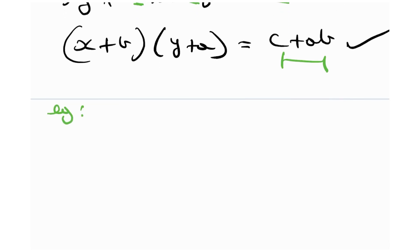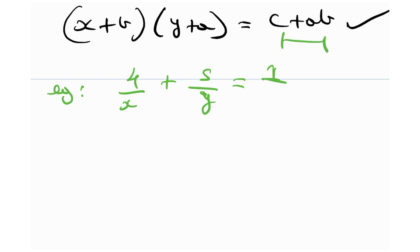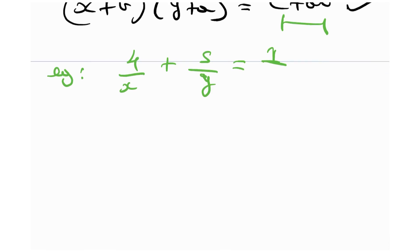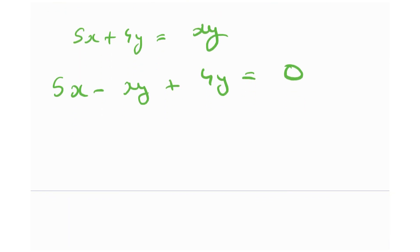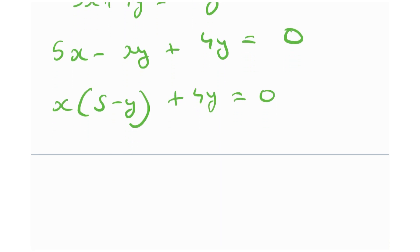Let me give you an example to make this crystal clear. Suppose we have 4/x + 5/y = 1 — a question from a Canadian contest — and we need to find the number of ordered pairs (x, y) satisfying it. Getting rid of the fractions gives 5x + 4y = xy, which rearranges to 5x - xy + 4y = 0, and taking x common gives x(5 - y) + 4y = 0.